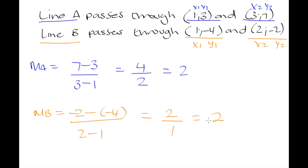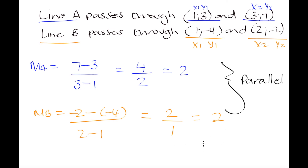Both lines have a slope of 2 — they have the same slope, their gradients are equal. And that means we can conclude that these two lines are parallel to one another because their slopes are equal. So that is another way we can determine whether we have parallel or perpendicular lines by calculating their slopes and seeing the relationship between them. If they have the same slope the lines are parallel, and if their slopes are the negative inverses of one another the lines are perpendicular.